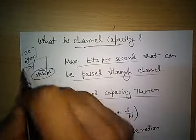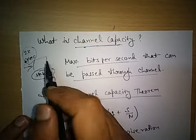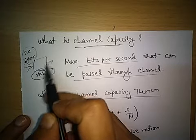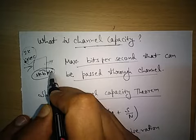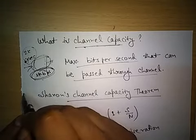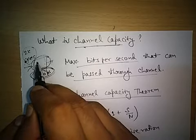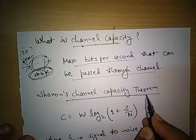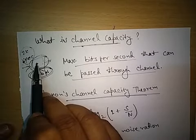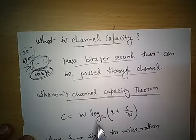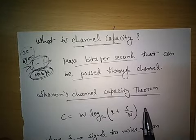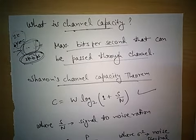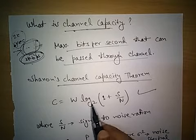If we exceed the channel capacity, we cannot pass those bits per second without error, or the output will not give the desired result. To determine the capacity of a channel, Shannon defined a formula — the channel capacity theorem — that gives the maximum limit we can pass through a channel, taking noise into account. The channel capacity theorem is defined as C equals W log₂(1 + S/N).